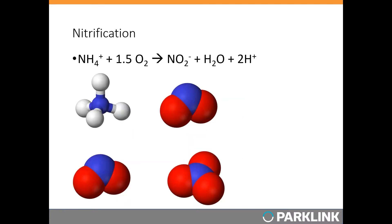In nitrification, ammonia enters the process in two separate steps. For plants that are not nitrifying well, ammonia may just end up leaving the plant in its original form. In the nitrification process, ammonia on the left gets converted to nitrite, and then in the second step, nitrite gets converted to nitrate.